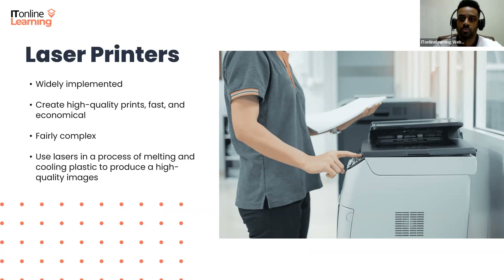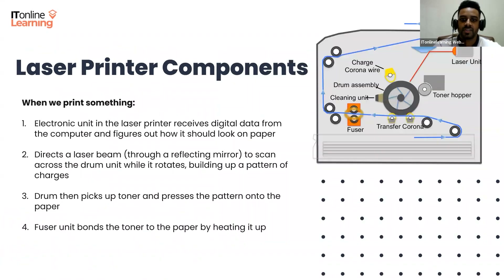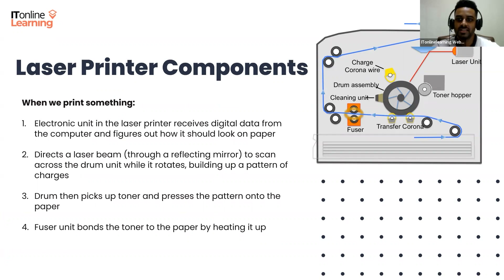Laser printers are fairly complex. They use lasers in the process of melting and cooling plastic in order to produce a high-quality image. The major components of a laser printer, besides the electronic circuits, include the laser unit, drum unit, charging corona wire, the toner hopper, and the fuser unit.